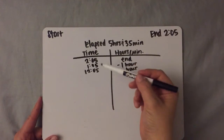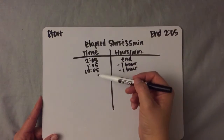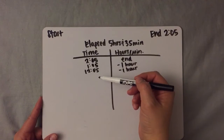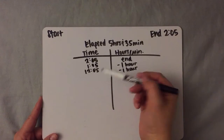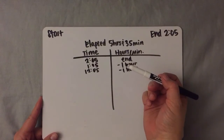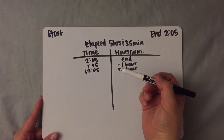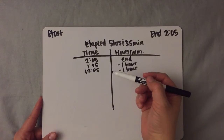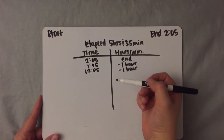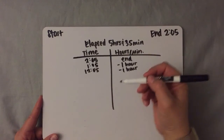Don't forget that before 1:05 it's 12:05 — it's not 0:05. There's nothing that comes before 1:05; our hours repeat.